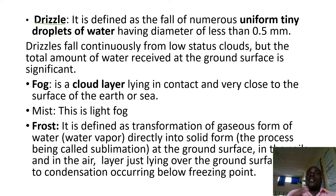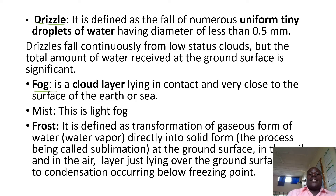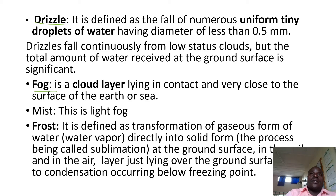Then we have fog. Fog is a cloud layer lying in contact with and very close to the earth's surface or sea. It is a cloud almost touching the earth's surface or the surface of the sea or ocean. It is always common in morning hours or during the wet season.